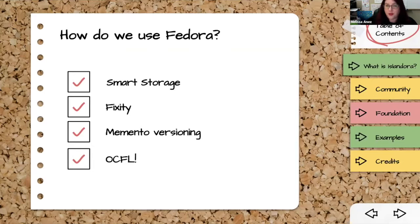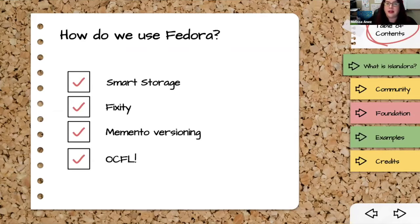Fedora is also the source for fixity checking in Islandora, Memento versioning — that Wayback Machine-compatible Memento you can keep of your objects — and we're really excited about OCFL. We're making sure that Islandora is going to be compatible with Fedora 6 as soon as possible, because our community is looking forward to being able to work with OCFL.